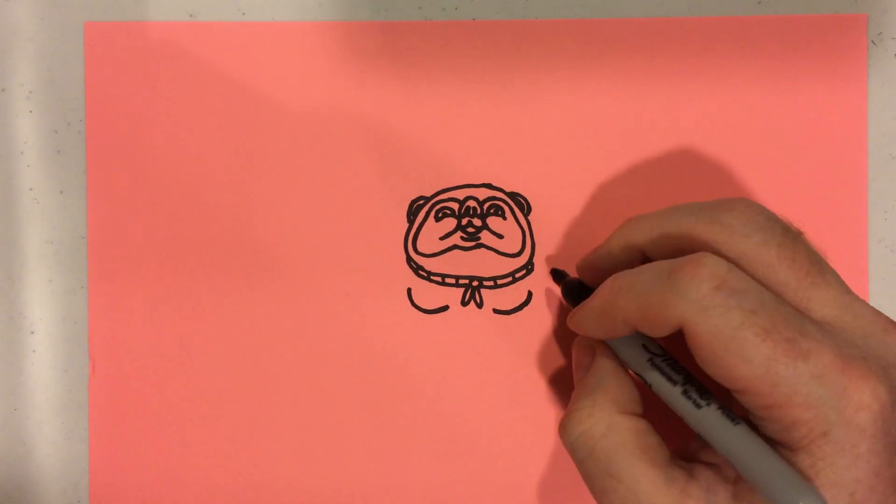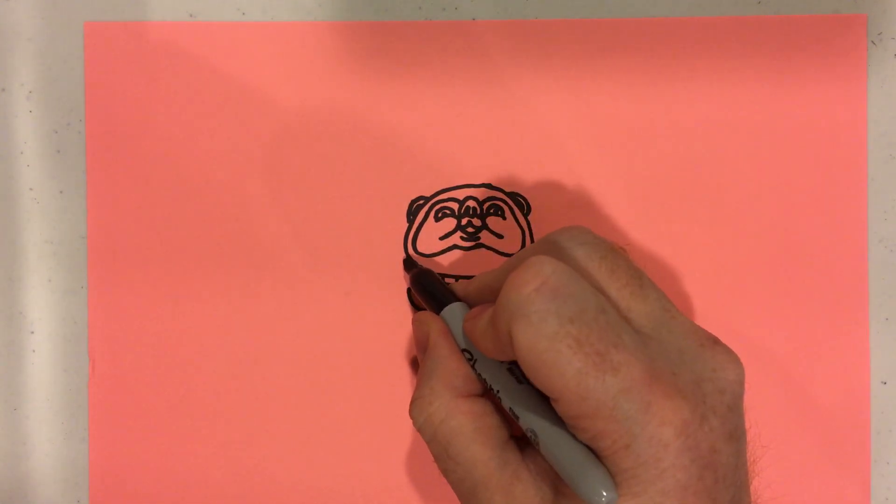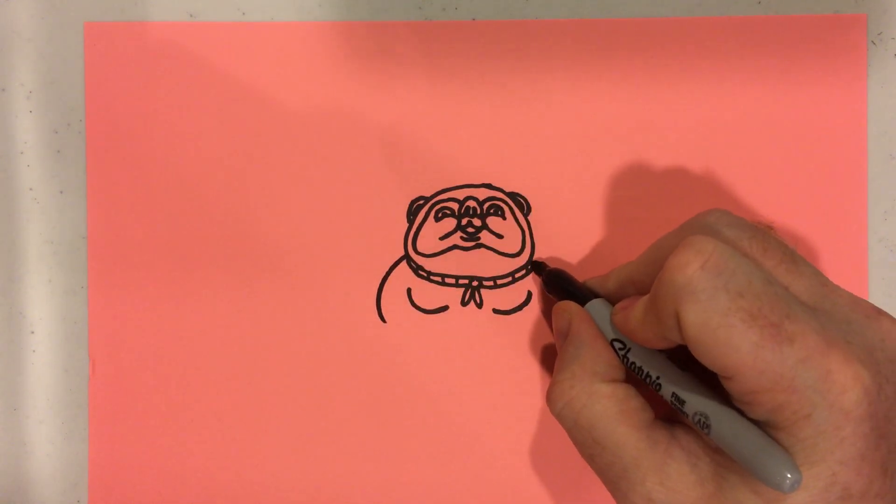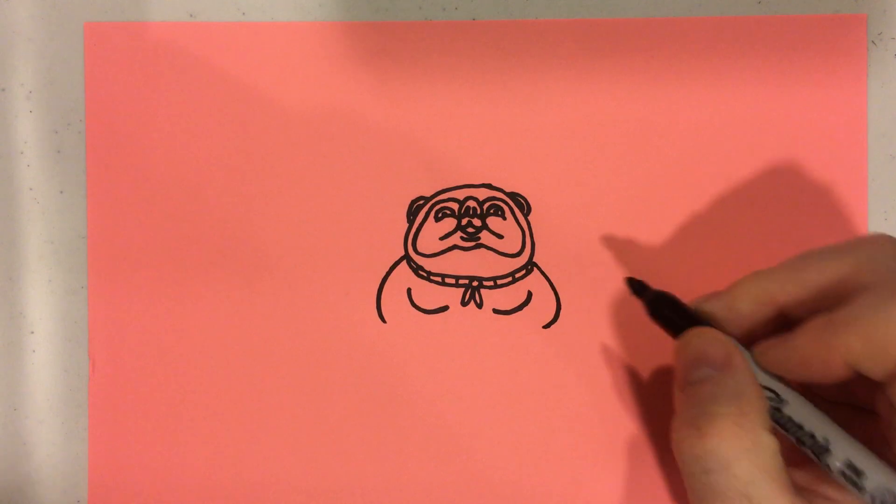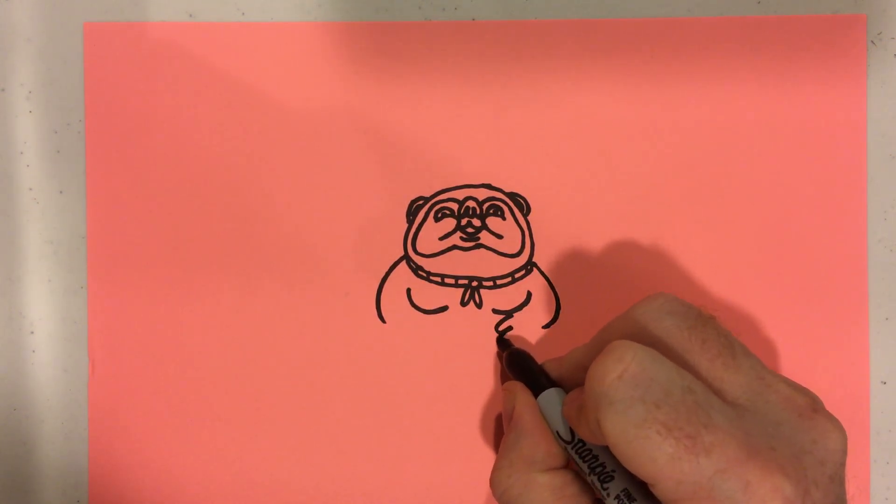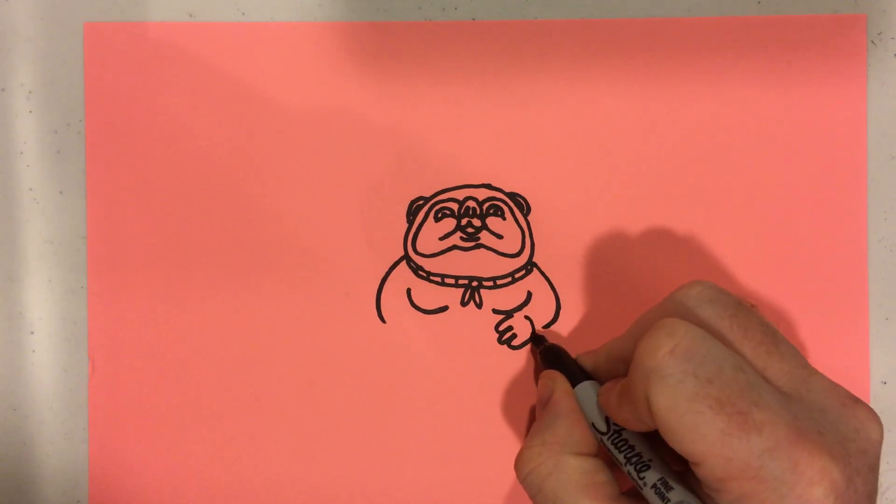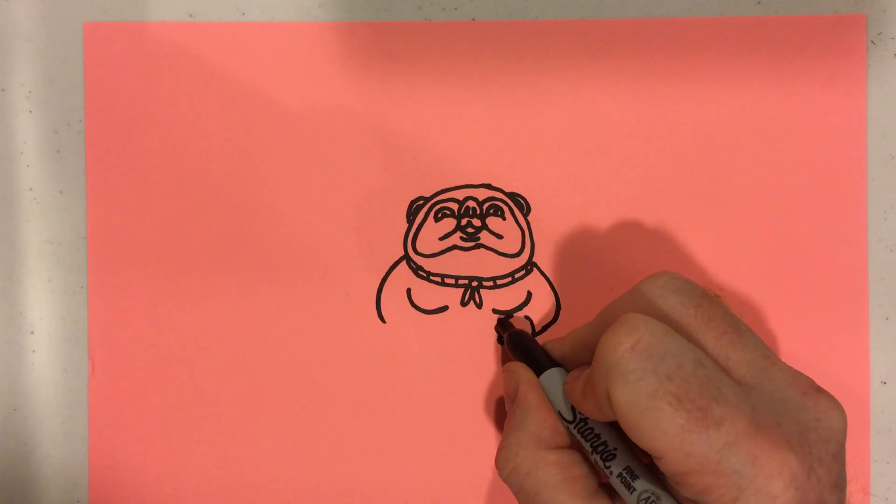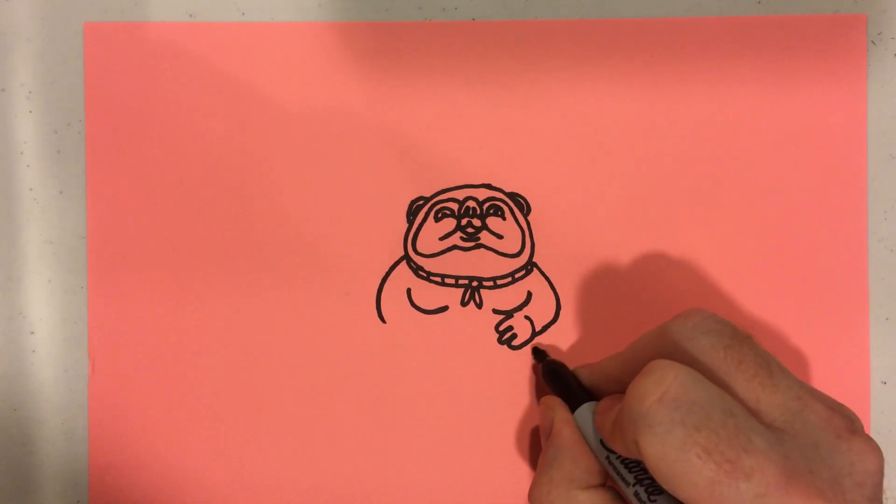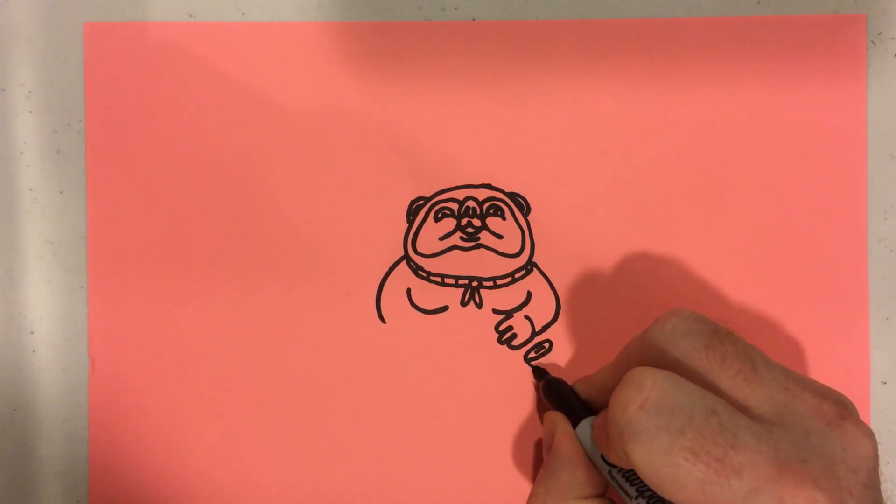And then his arms, and down, and down. And then we're going to draw his hand. And he's usually carrying around a bottle of sake. So there's the little bottle.